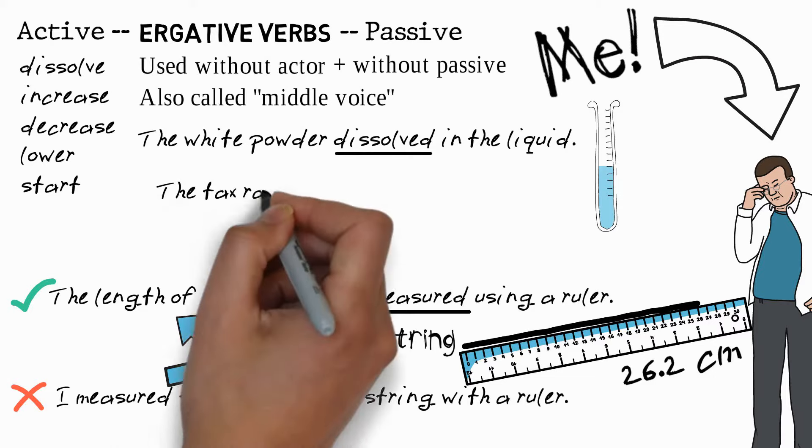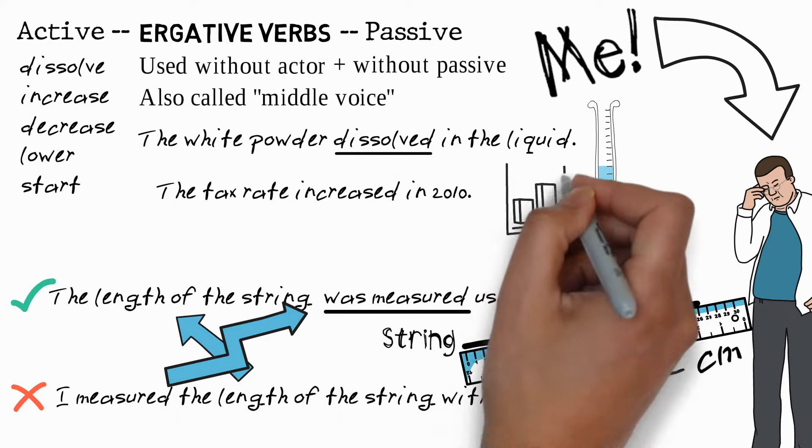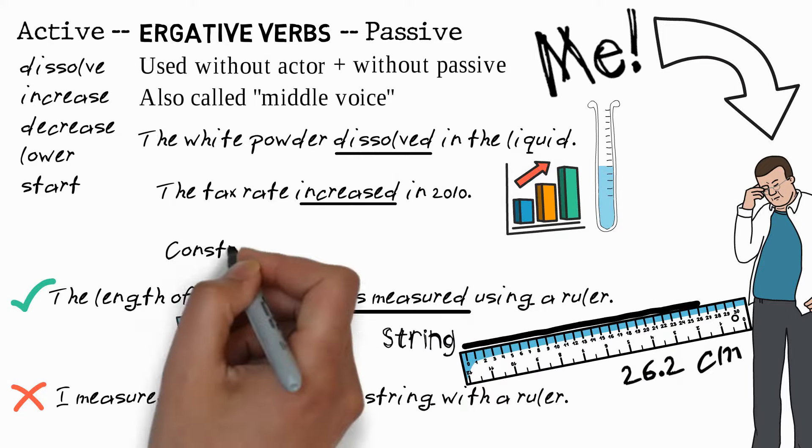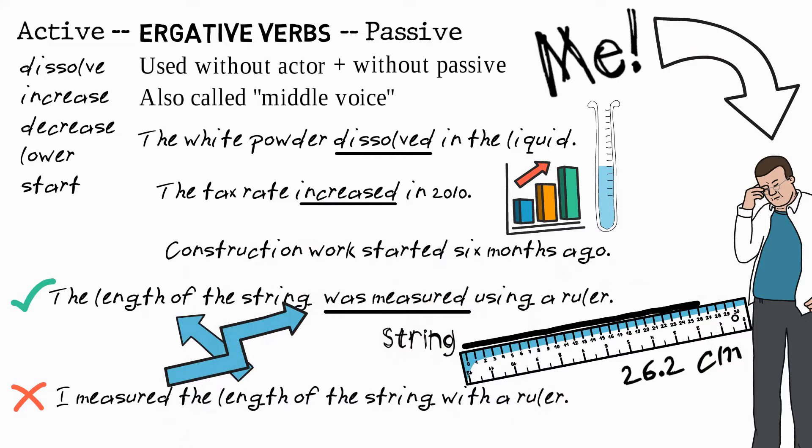Another example: the tax rate increased in 2010, so here we used increased, not was increased. A third example: construction work started six months ago. Those are just a few examples. There's actually many ergative verbs, and you can find more of those in a more detailed explanation on the website.